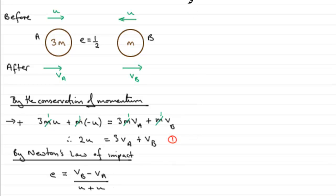All we need to do now is just fill in our values. We've got e, we know, is a half, the coefficient of restitution, equals VB minus VA over 2u. If we now multiply both sides by 2u, you'll end up with u over here on the left equals VB minus VA.